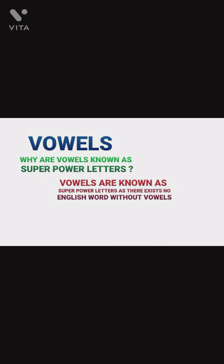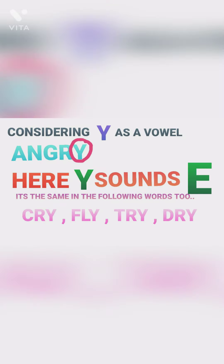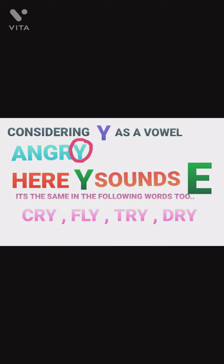Moving forward — you might be wondering, why are vowels known as the superpower letters? Vowels are known as the superpower letters because there exists no English word without vowels. Now, you might have been observing that in the words 'cry', 'fly', 'try', 'dry', etc., we don't have any vowel. But here, Y is acting as the vowel in this situation.